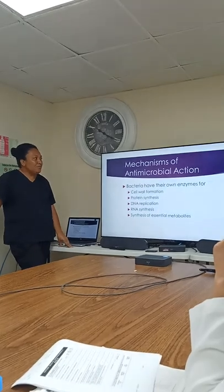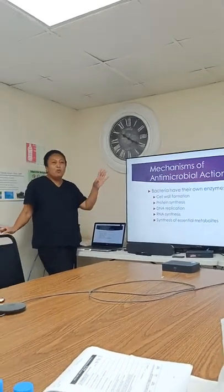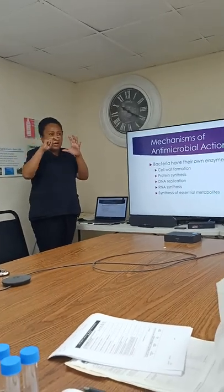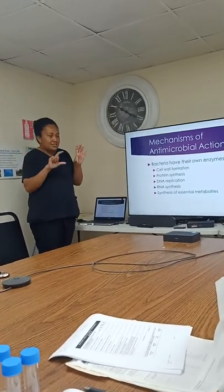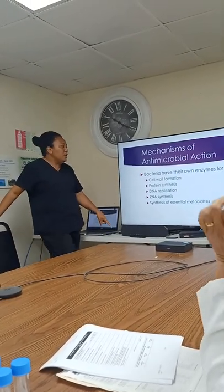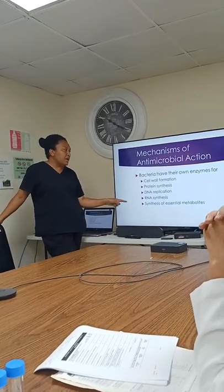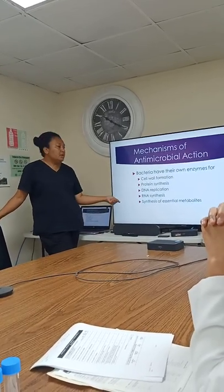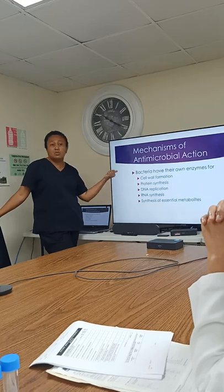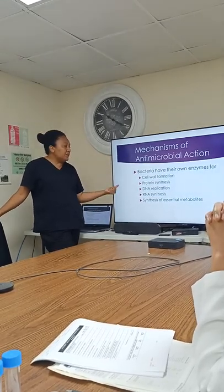Let's look at the mechanism of antimicrobial action. You all know what bacteria look like — a rod or oval shape. These bacteria have their own enzymes to make a cell wall. They also have their own enzymes to synthesize protein, and you can also look at their DNA.